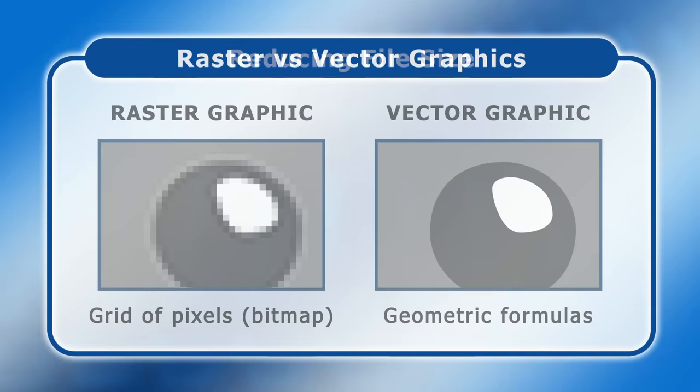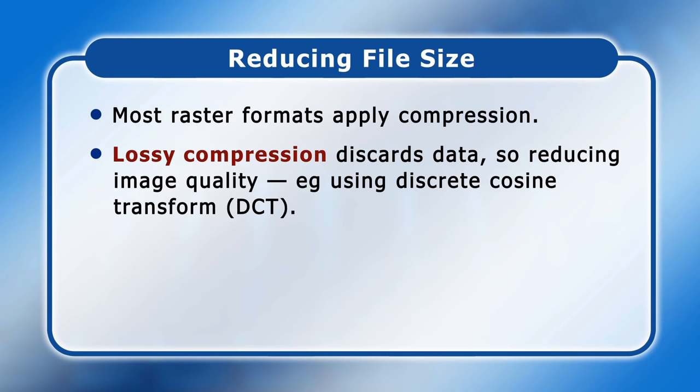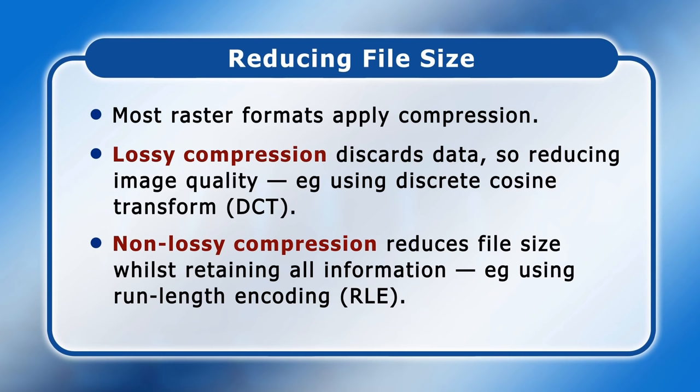To reduce file size, most raster formats apply lossy or non-lossy compression. Lossy compression actually discards data, so reducing image quality. A common lossy compression technique is discrete cosine transform, or DCT, which approximates the content of an image using trigonometric functions. Non-lossy compression reduces file size while retaining all of the information in an image. A common method here is run length encoding, or RLE, which works by storing sequences of identical bytes as a single value followed by a count.